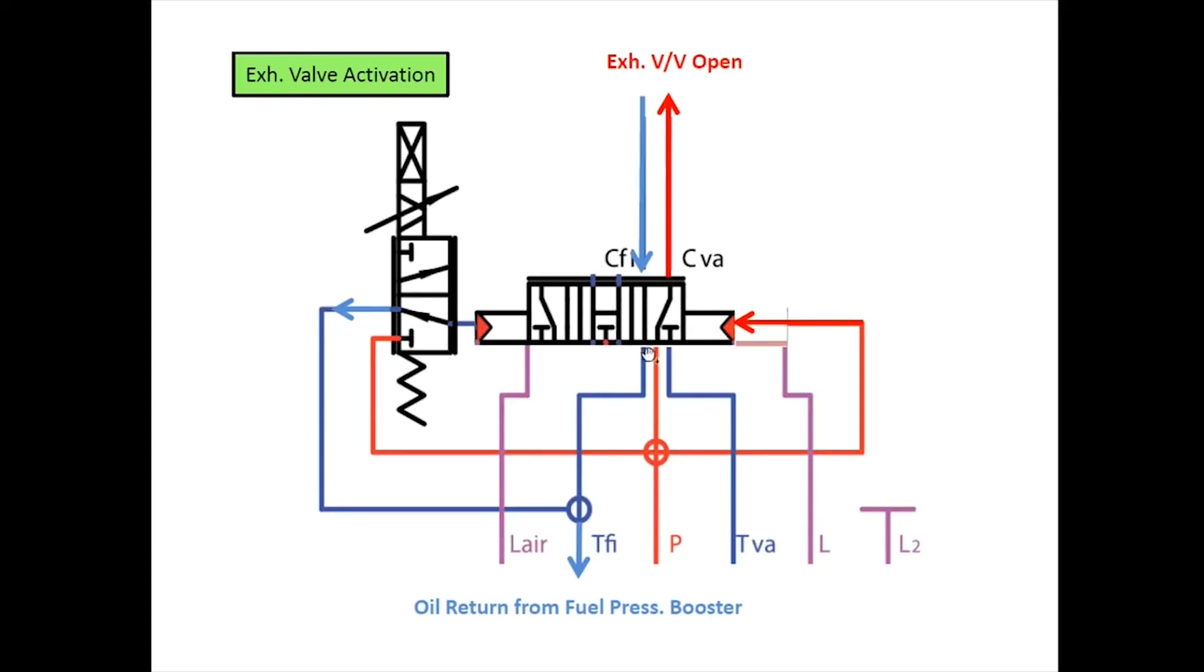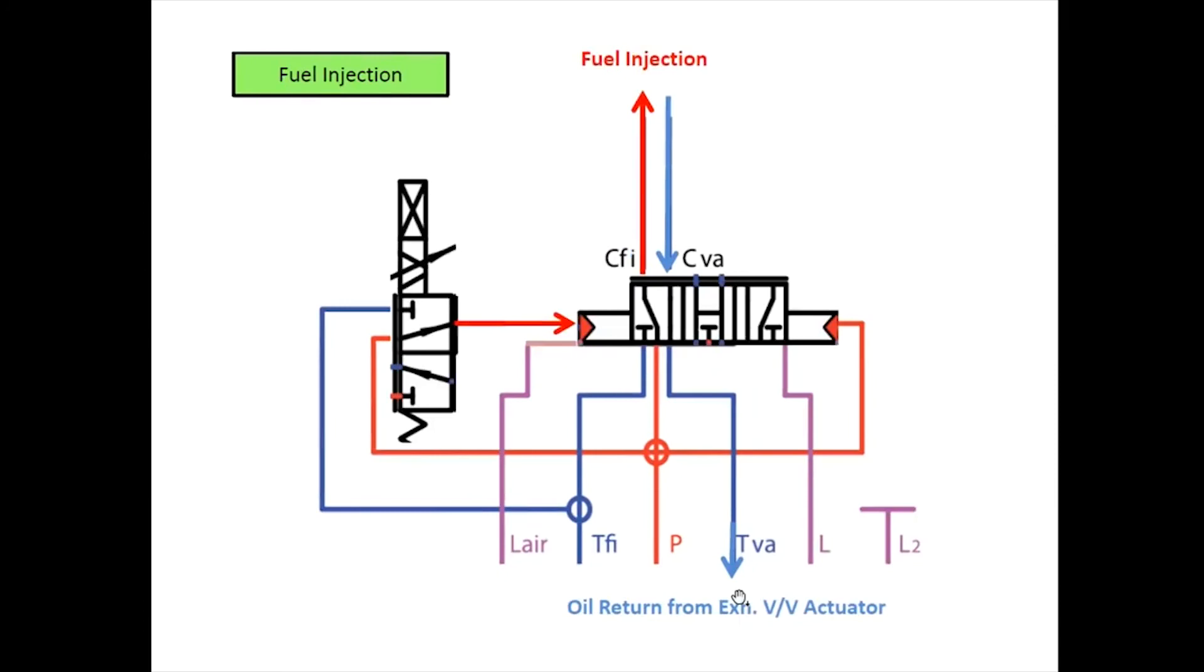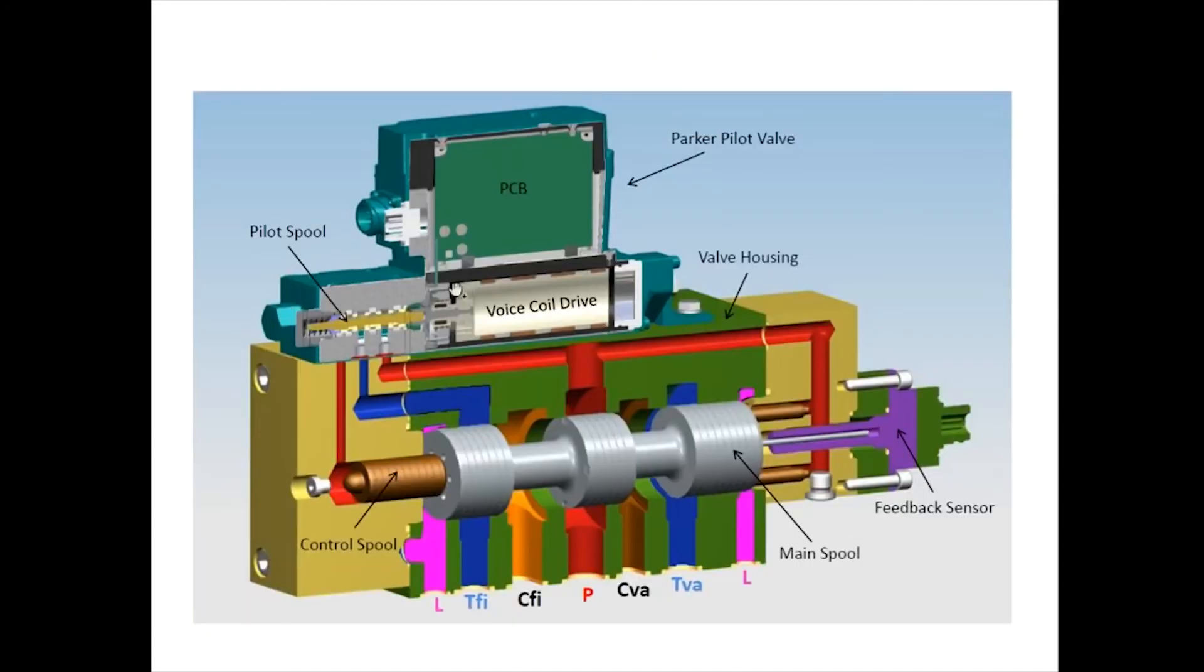We have drain from here going here—oil return from the fuel oil press booster. You can also see the description. We also have oil return from the exhaust valve activator, as I said before. This is the pilot spool, and the main spool. This is what they look like—the pilot spool and the main spool, which is more complicated.